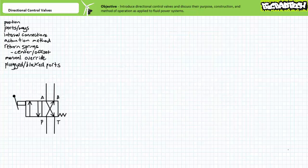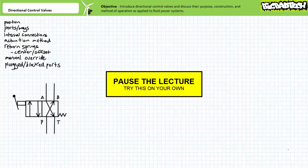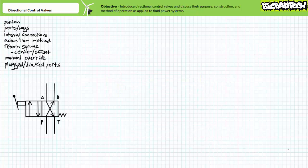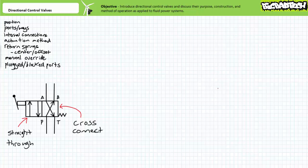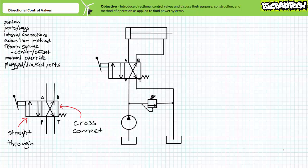This is a two-position, four-way manually actuated directional control valve, spring-offset into what is called the cross-connect position. The cross-connect routes P to B and A is routed to T. The other position is called a straight-through connection — P is routed to A and B is routed to T. These valves are commonly employed to influence the position of a double-acting hydraulic cylinder. Customarily, the A port is routed to the cap end and B to the rod end. The spring-offset cross-connect position keeps the cylinder retracted; when manually actuated to the straight-through position, the cylinder extends.